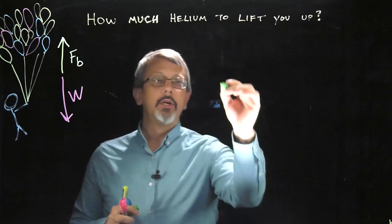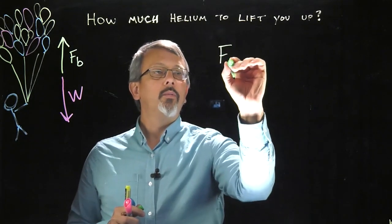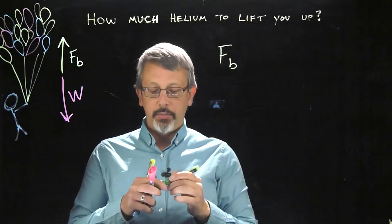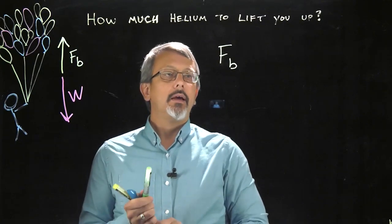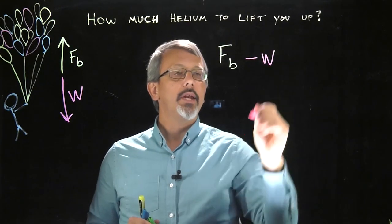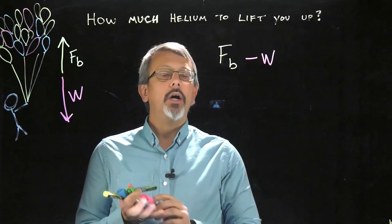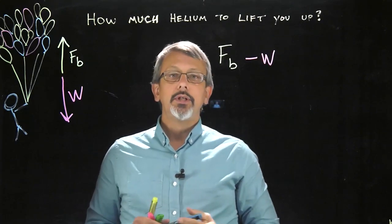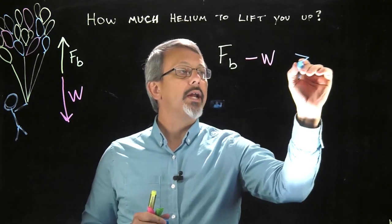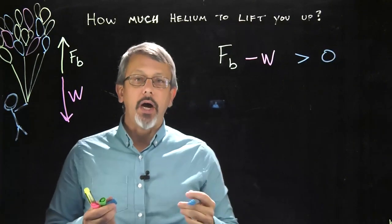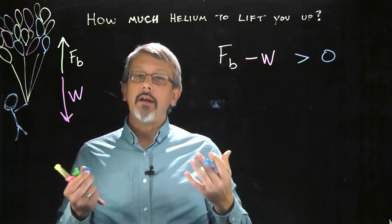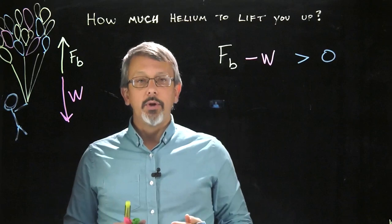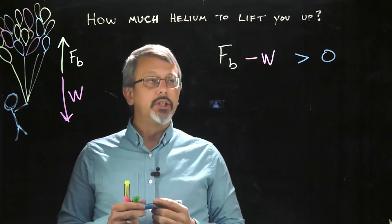So in this particular case, if we take those two things, we're going to do an equilibrium where we take our buoyant force, which acts positive direction, and our weight in the negative direction. And we want those two things to add up to be some value greater than zero. If that value is positive, we'll float. If that value is negative, we'll stay rooted to the ground.